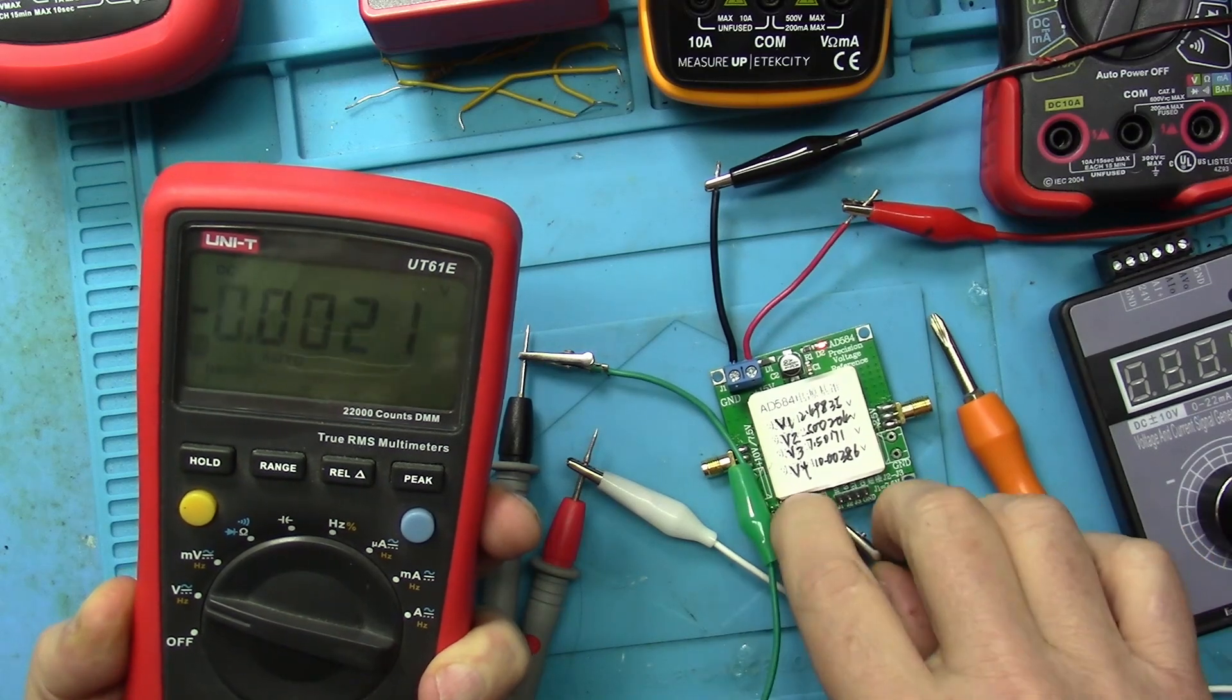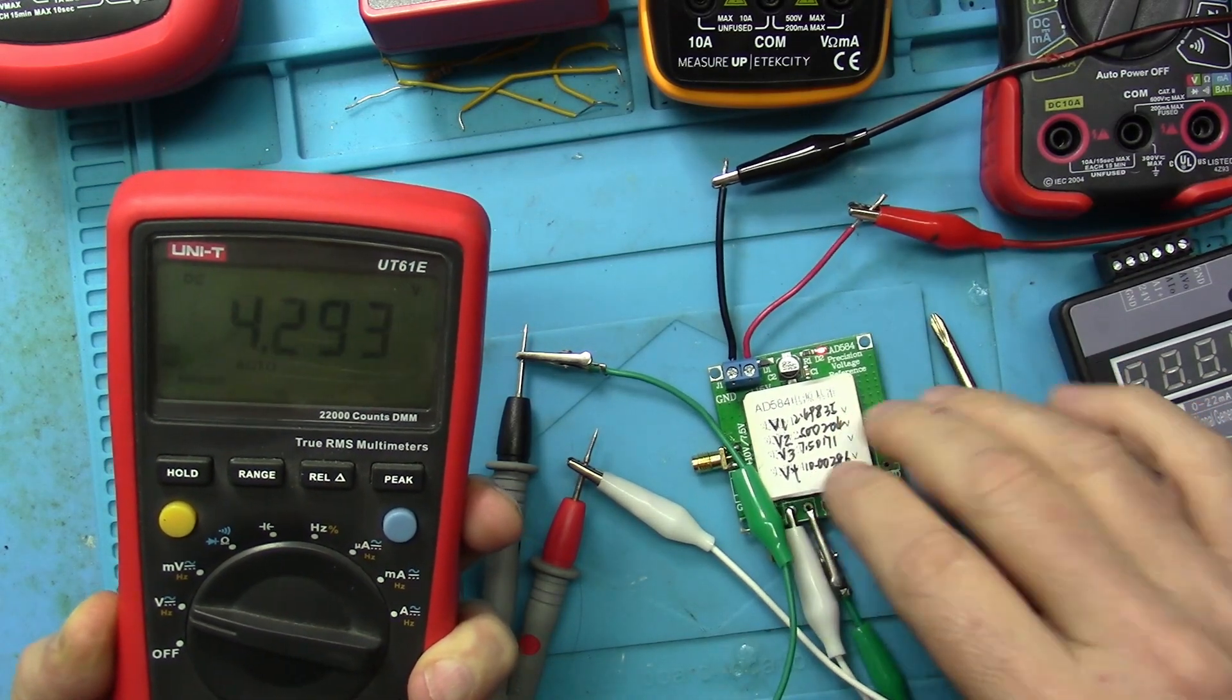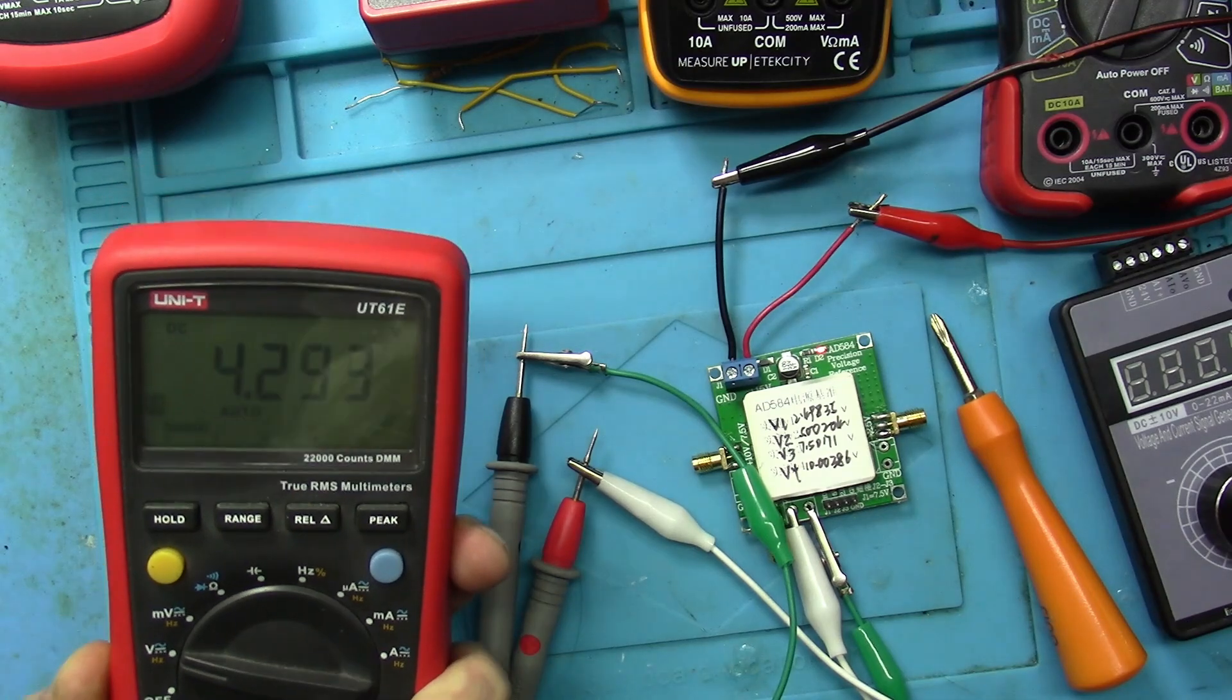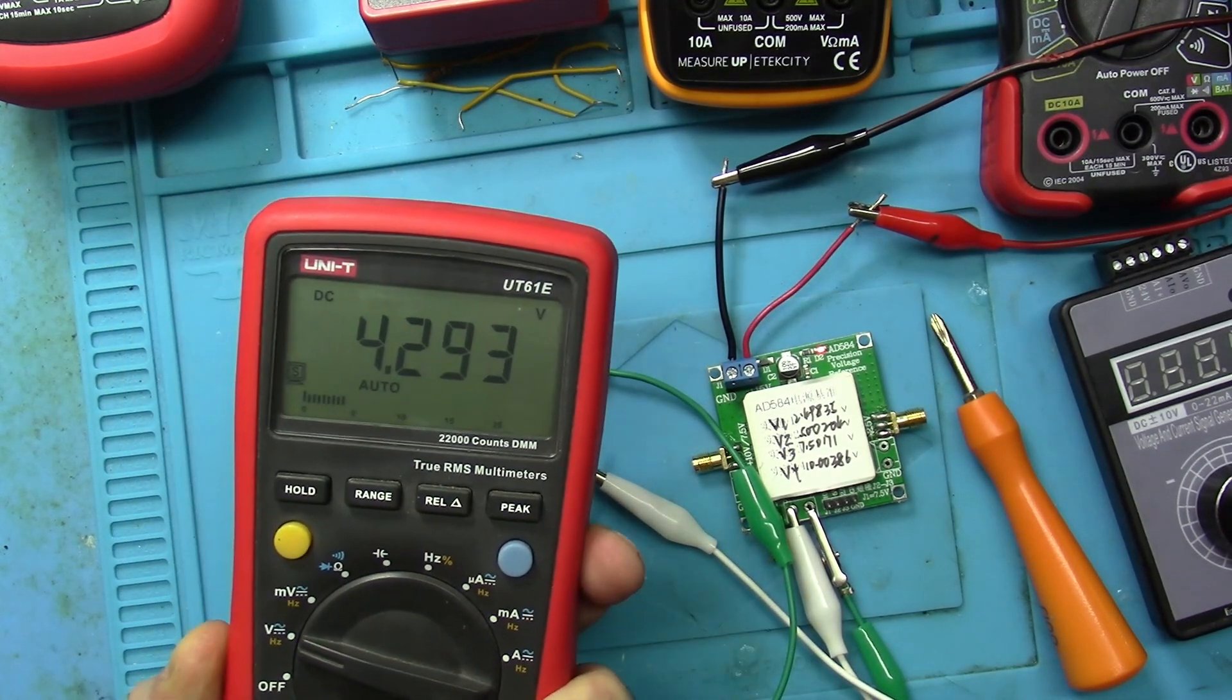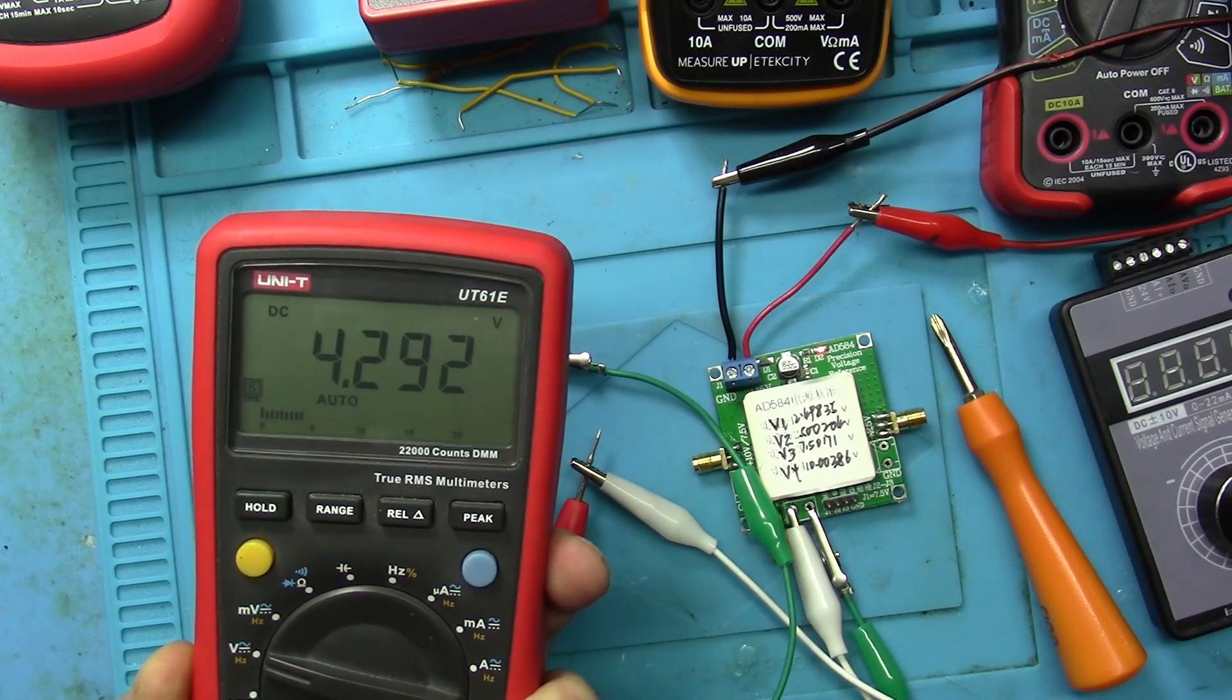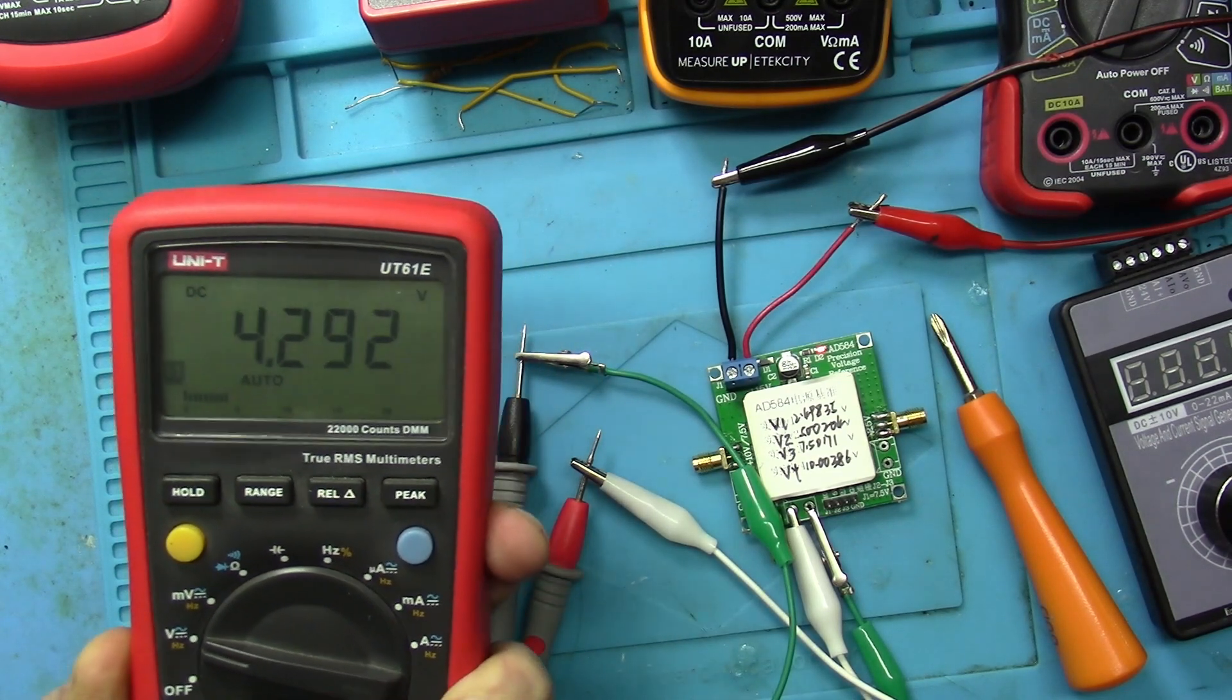Make sure that these are making contact. We've settled out at 4.298 volts, and we know that that's not right. This is 5.002. We already proved it to ourselves.